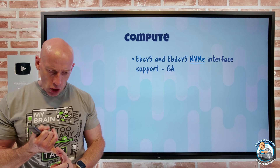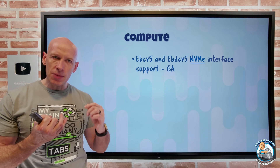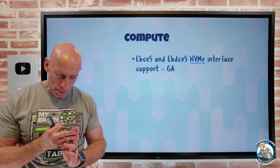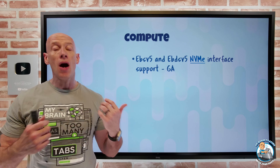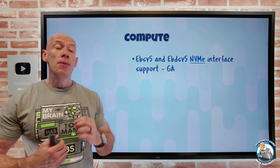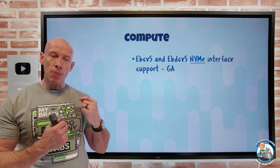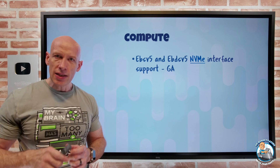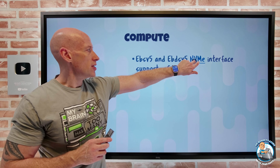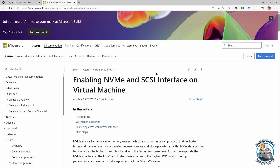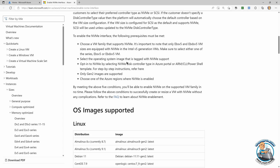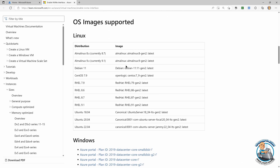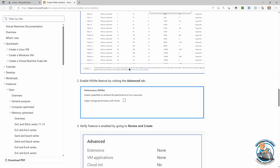You need to be Gen 2 and the VM OS image has to be tagged with NVMe support, but if you do this you can actually attain higher IOPS and throughput. It's not an additional cost, but you now have the option as part of the creation of these. This walks through the ability to enable that NVMe and SCSI interface on the virtual machines and talks about the images supported and what you'll see in the portal.